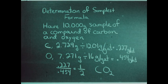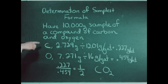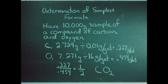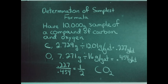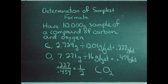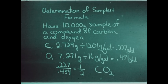With this information, we can proceed to calculate the simplest formula of the compound. For example, assume that we have a 10-gram sample of a compound of carbon and oxygen. We've analyzed this compound and found that in the 10-gram sample we have 2.729 grams of carbon and 7.271 grams of oxygen. This is the weight ratio in which the two elements combine.